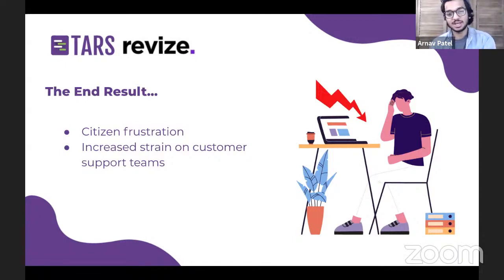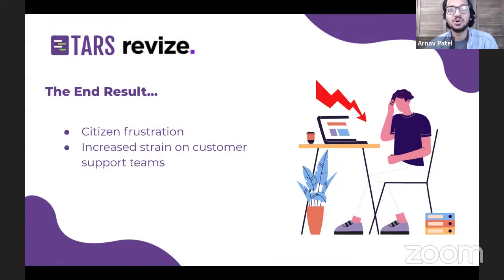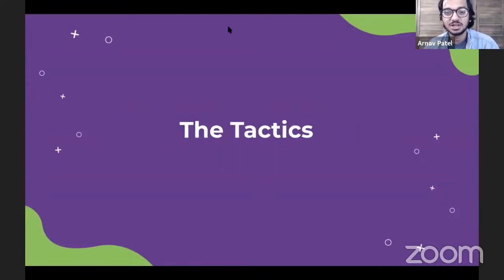When Danny and I are talking about our tactics, keep these end results in mind. We're trying to reduce citizen frustration, make it easier for them to find information on the website so they don't get pushed towards your customer support team and aren't making extra calls to your contact center. Now that we're all on the same page about what the problem is, let's talk solutions and jump right into the five tactics we promised you in the title of this webinar.